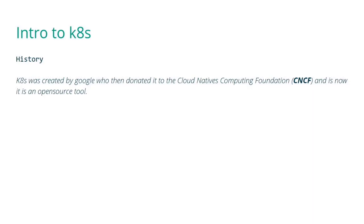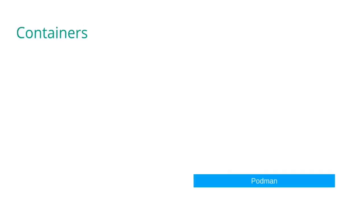When Docker continued to thrive managing microservices and containers, a container management system became a paramount requirement. Google was already running a container-based management infrastructure for many years, and the company made a bold decision to open source their in-house project called Borg. Borg was key to running Google services like Gmail and Google Search. To enhance container management, Google came up with Kubernetes, an open source project that automates deploying and managing multi-container applications at large scale.